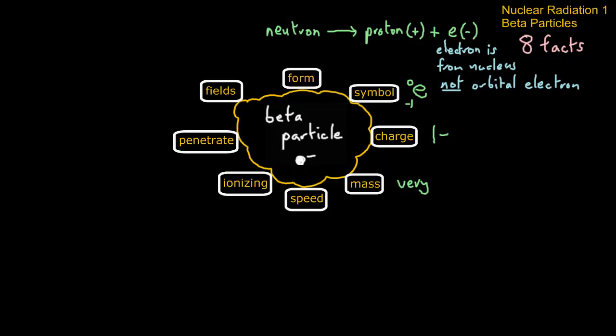And the mass is very low compared to the alpha particle. Compared to the gamma ray, it has mass, because gamma rays have no mass.